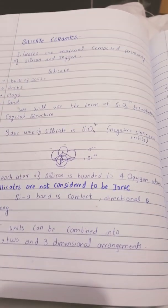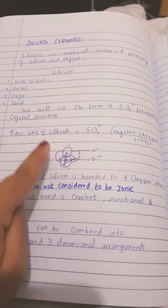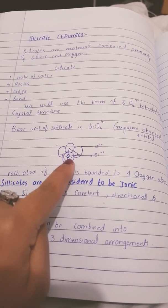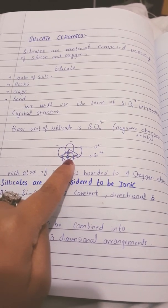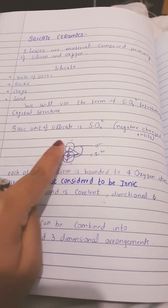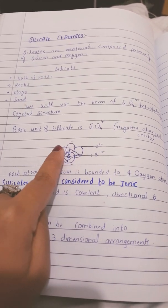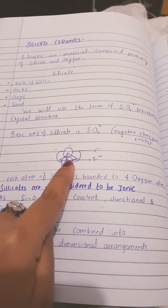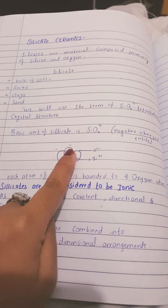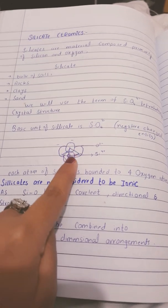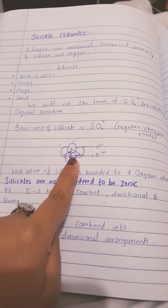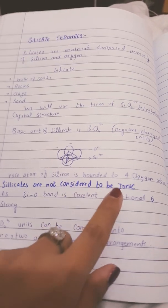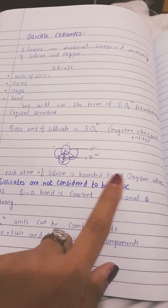It is a tetrahedron in which the central atom is silicon and the corner ones are oxygen atoms. The bond between silicon and oxygen is covalent, so we would not call silicates as ionic.